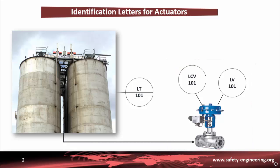As a reminder, the first letter — in this case L — is used to designate the measured or controlled variable. PV means a valve to adjust the flow rate in order to control the pressure. Further explanation will be given in Part 4 about the different kinds of valves and their technology.